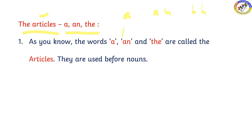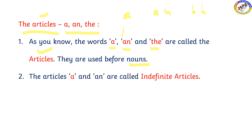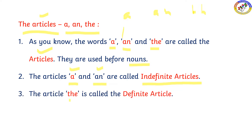Let us see this. As you know, the words A, An, and The are called the articles. We are going to learn how to use the articles. They are used before nouns. The articles A and An are called indefinite articles. The article The is called the definite article.